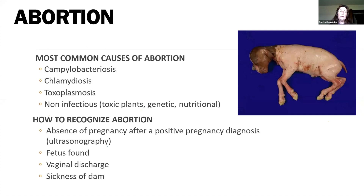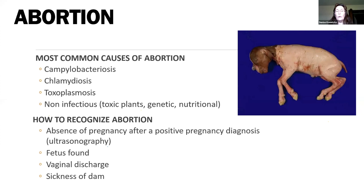Recognizing abortions — most commonly we are presented with a fetus and placental tissues. Sometimes we can identify impending abortions through ultrasound. Oftentimes we can see vaginal discharges, usually foul-smelling. Sometimes there's sickness of the dam, but as we work through some of these diseases you'll see that many times the dams aren't showing any type of clinical signs. So that's not always a good metric for assessing impending abortions.